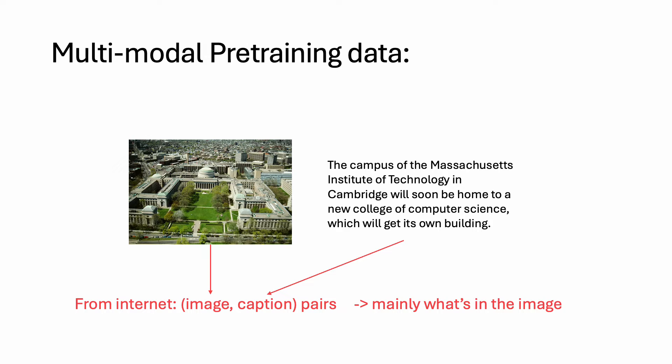If we look at what data is used to train these multimodal large-language models, it's usually data crawled from the internet in terms of image and caption pairs. The captions describe what the image contains. In comparison, spatial reasoning favors data that contains relationships between objects, which are rarely found in captions. For example, they never contain things like 'object A is on the left of object B,' not to mention fine-grained relationship data like distances.